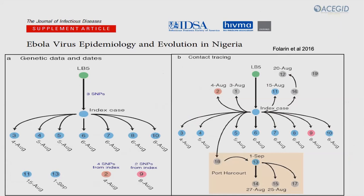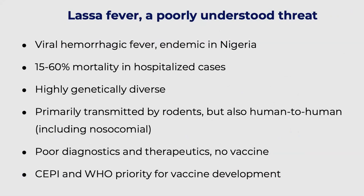Within a few weeks, we were able to combat the outbreak in Nigeria. We quickly sequenced the virus, carried out contact tracing, traced everyone the patient had come in contact with, and made public health decisions to prevent the outbreak from getting out of hand. Over the years, we've also been working on Lassa fever in Nigeria. Lassa fever is a viral hemorrhagic fever that is very endemic in Nigeria — every year we have outbreaks, and the mortality rate can be about 15 to 60% in some cases.